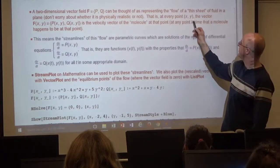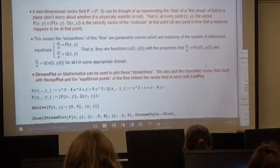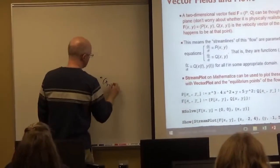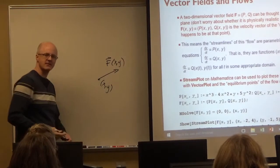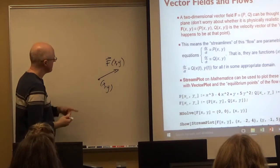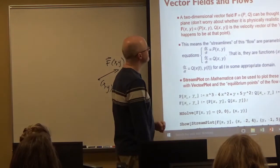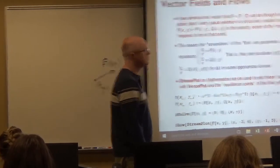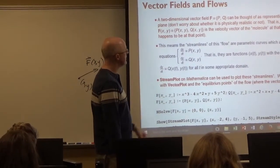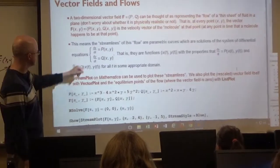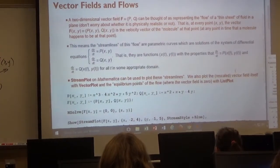At every point, the output of the vector field drawn at a given point x, y — you think of that as a velocity vector for any molecule passing through that point at any moment in time. Technically, to visualize that more precisely, you need differential equations. The streamlines of this flow are parametrized curves which are solutions of a system of differential equations, functions that satisfy these properties for all t in the appropriate domain.